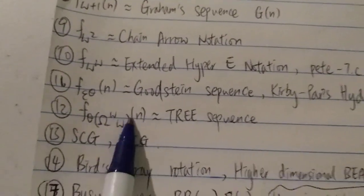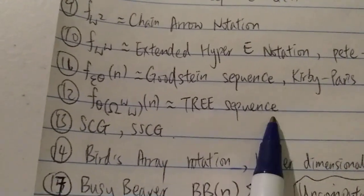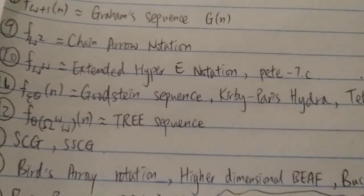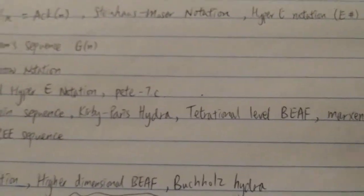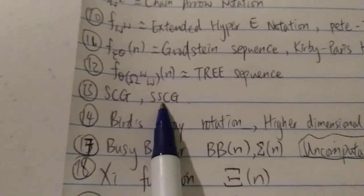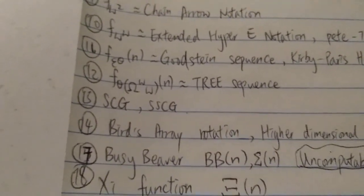And next, we have this one over here, which is the tree sequence. So the tree sequence, that's tree(3), tree(4), tree(5), grows faster than any of these over here. And next, we have the SCG function, which of course grows faster than the tree sequence.